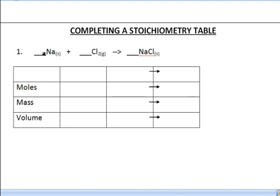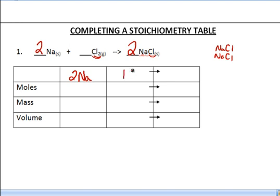The first thing we have to do is balance our equation. We've got one sodium, one sodium. We've got two chlorines, only one chlorine. You can't start with two and only end with one, so we're going to end with two sodium chlorides — an NaCl and another NaCl. That means we're going to use up both chlorines, but we also need to start with two sodiums. In terms of the stoichiometry table, you're going to fill in basically parts of your balanced equation in the spots below.